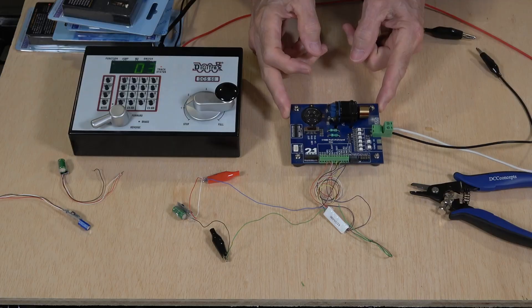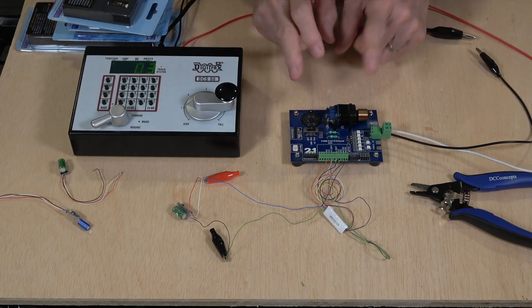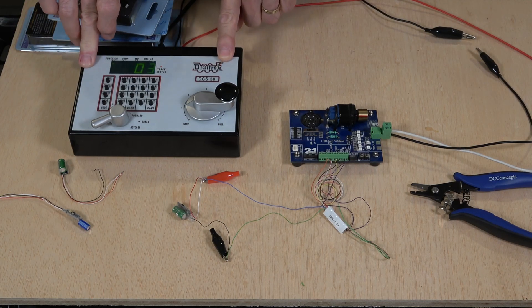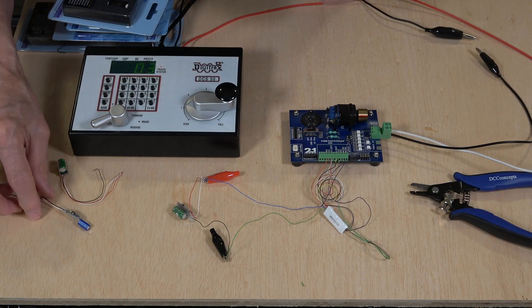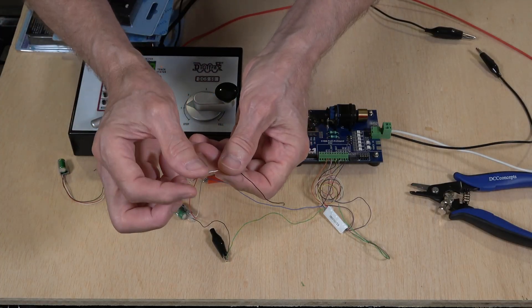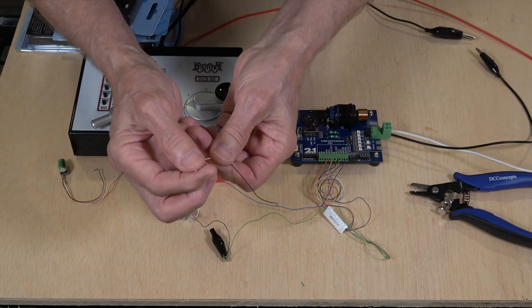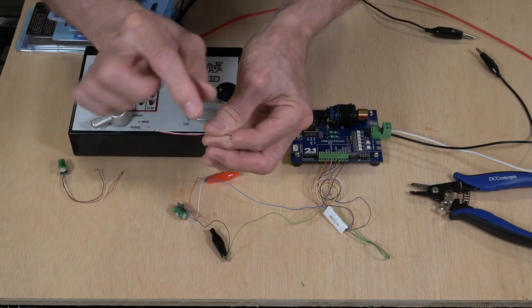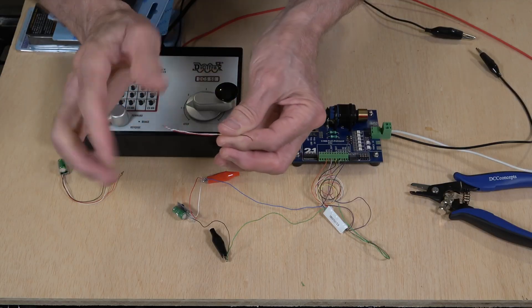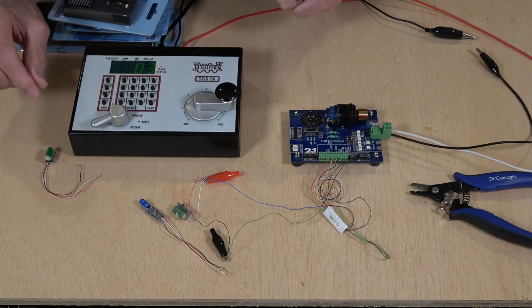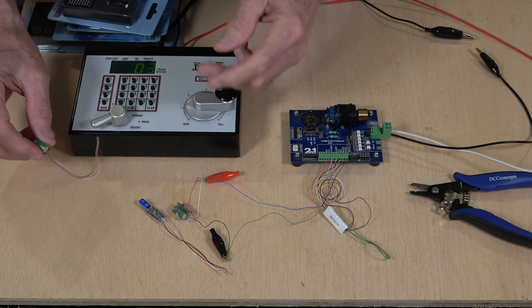I got this Soundtrax Econami decoder that I've had sitting in here for a while and hooked it up to my ESU decoder tester. And that is connected to a Digitrax Zephyr. As Nick was instructed, I took the red and the white wire, spun them together and soldered the wires together. And I put a little bit of solder on the black wire to keep those wires from fraying. And I did that to both of the 3-wire power bridges that I showed you a few weeks ago.